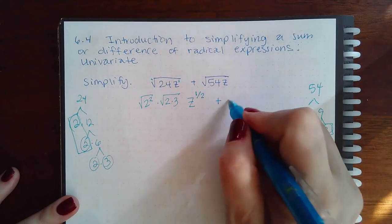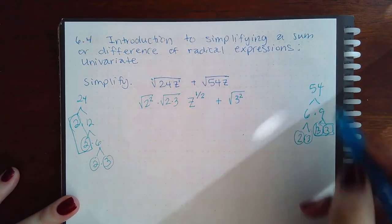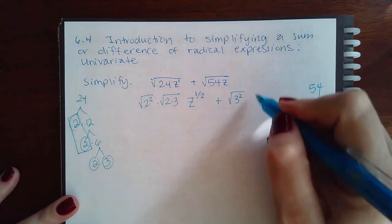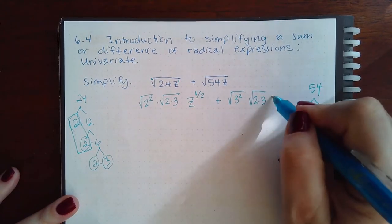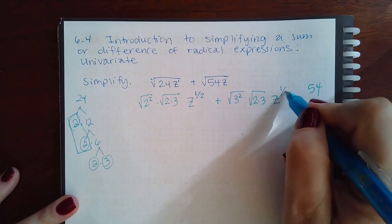So we have a pair of 3's, square root of 3 squared. We have these guys left over, so they'll go together in their own square root. And then that becomes z to the 1 over 2.